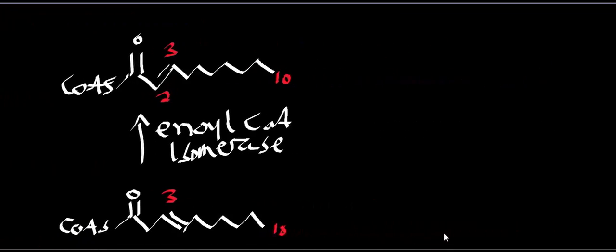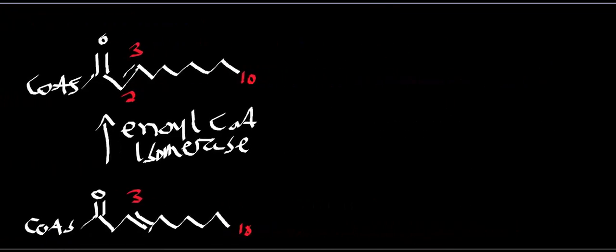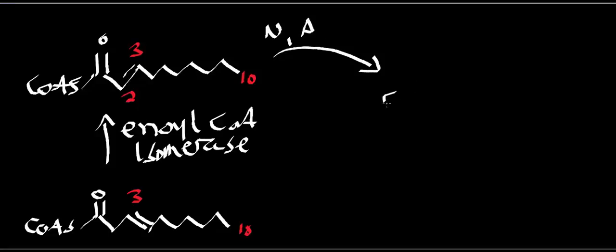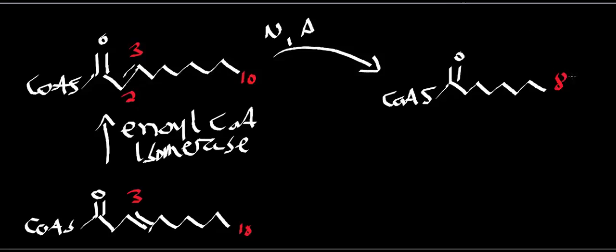Now this thing goes into normal beta-oxidation. With one round, we shorten by two carbons, generating an NADH and an acetyl-CoA. We end up with an eight-carbon fatty acid.